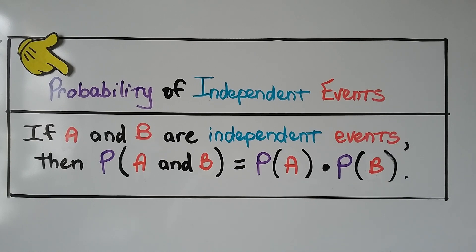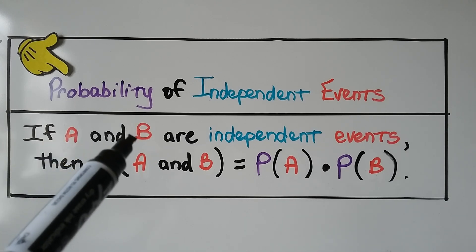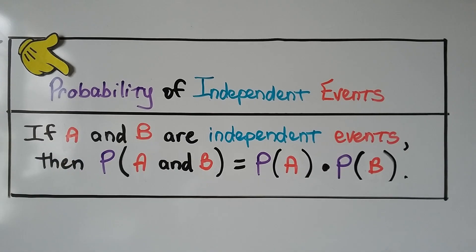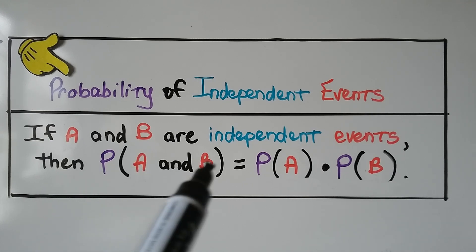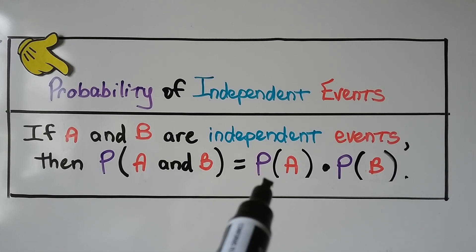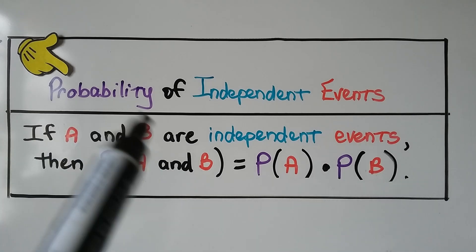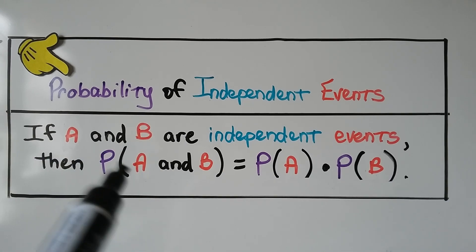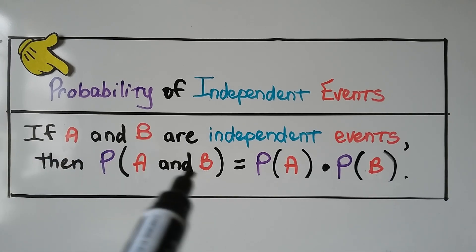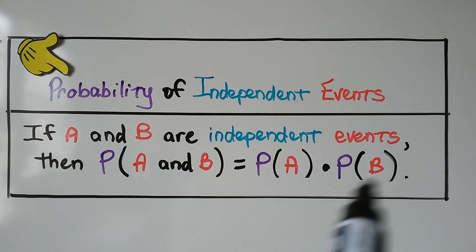For your notes: probability of independent events. If A and B are independent events, then the probability of A and B is equal to the probability of A multiplied by the probability of B. So for two independent events A and B, the probability of them both occurring is found by multiplying their individual probabilities.